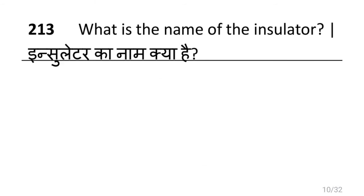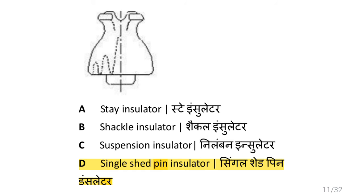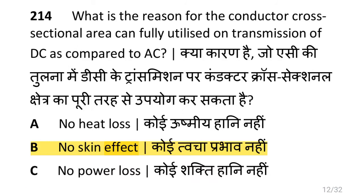What is the name of the insulator? Single shade pin insulator. What is the reason the conductor cross-sectional area can be fully utilized on transmission of DC as compared to AC? That is no skin effect.